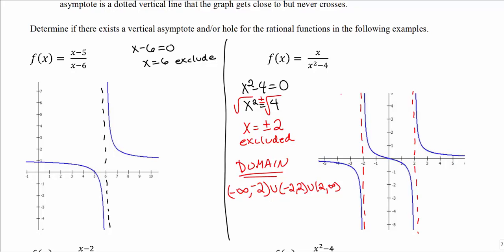Notice the extreme behavior around each vertical asymptote. On either side, the graph either shoots down toward negative infinity or shoots up toward positive infinity. To the left of negative 2 the graph goes way down, to the right it goes way up — totally opposite directions. Similarly, to the left of positive 2 the graph heads toward negative infinity, and to the right toward positive infinity. The graph looks like it would never meet up on either side.